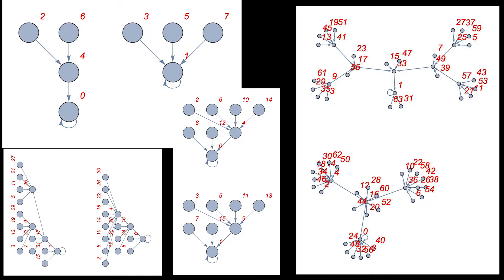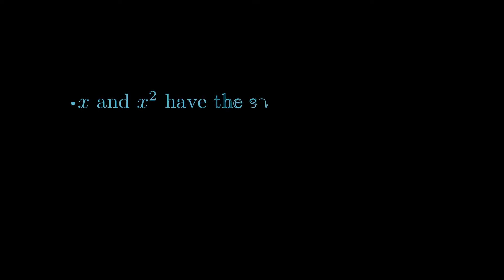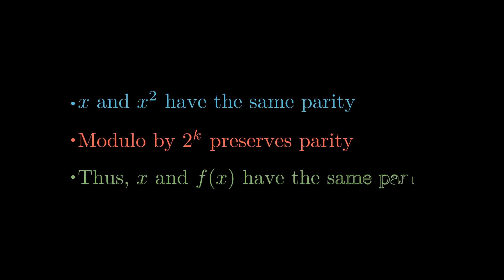We will now show a result that every odd number eventually ends up at 1, and every even number eventually ends up at 0, under repeated application of the map f. To see this, first note that squaring a number preserves its parity. x and x squared are either both even or both odd, and moreover, taking modulo by a power of 2 also preserves parity.